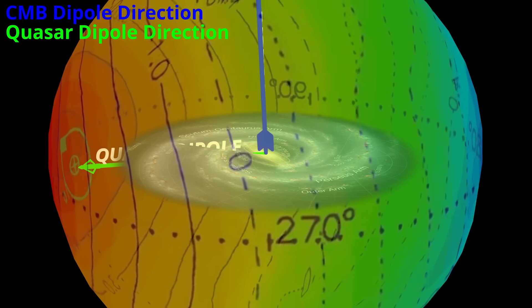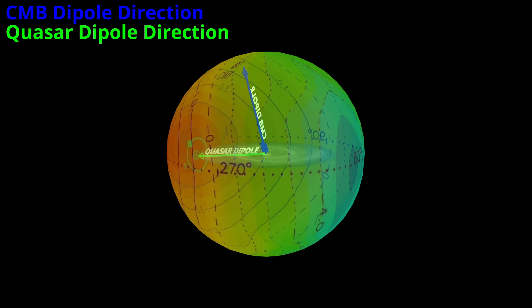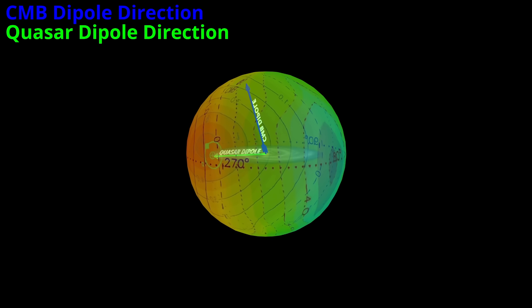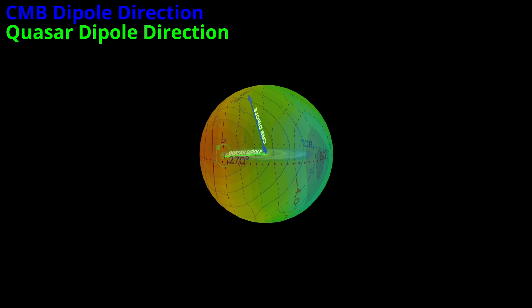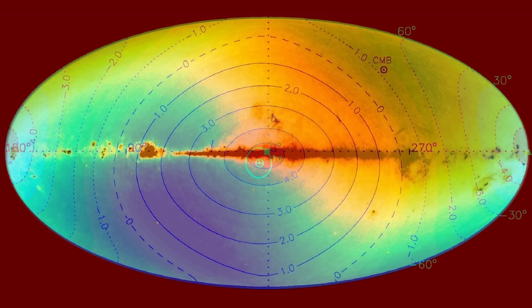This creates a stark contradiction. The CMB dipole and the quasar dipole cannot both be telling us our true motion through the universe. One points to Leo, the other towards the galactic center. One implies a velocity four times larger than the other. So which one is correct? And what does it mean for the other?